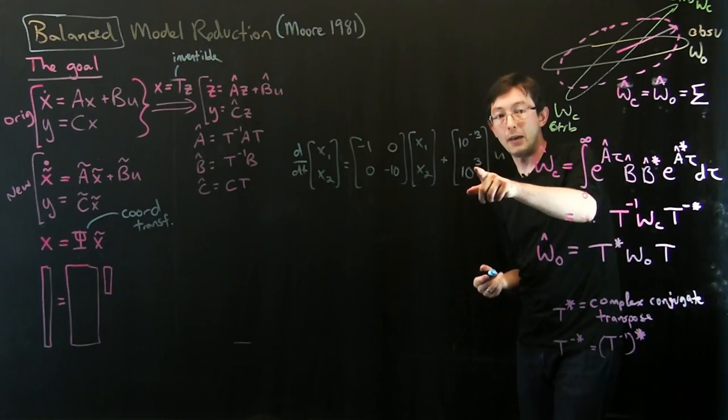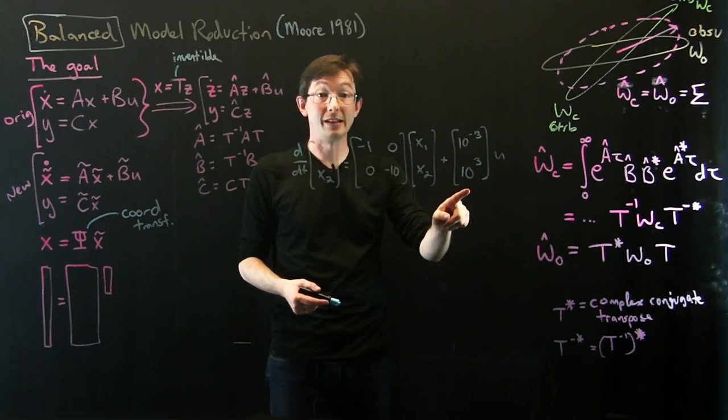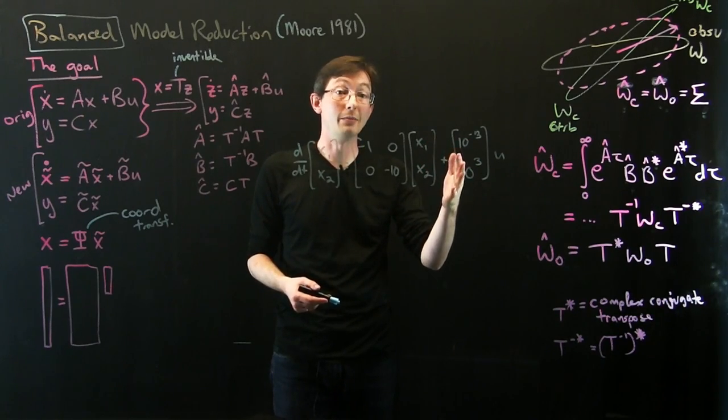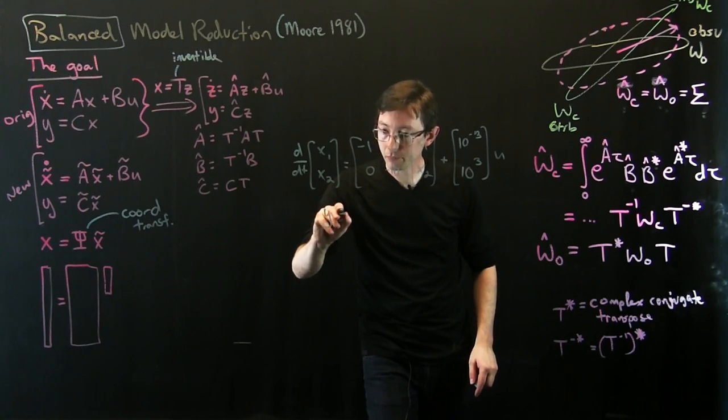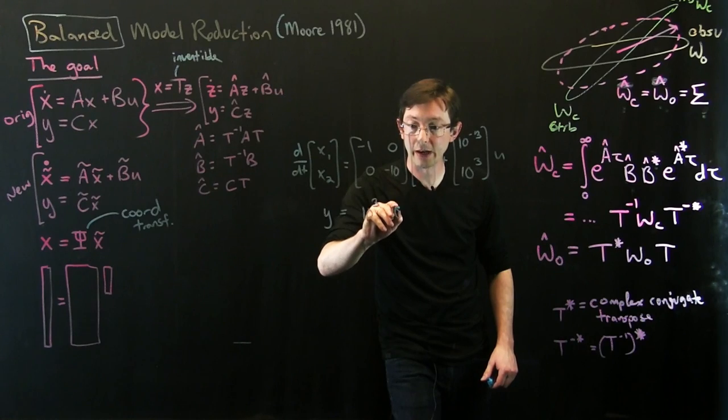And what I'm going to do is I'm going to have a system state that's 10 to the minus 3, 10 to the plus 3, u. So notice that my first state is much harder for u to control than my second state. It's like u impacts the first state way more aggressively.